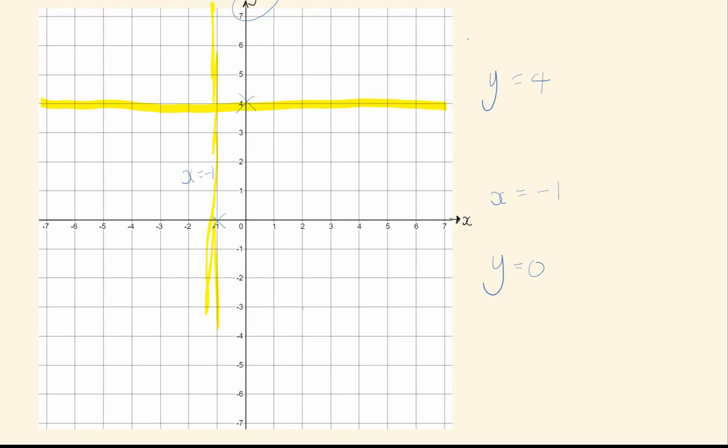So a couple of special cases, y equals 0 looks a bit more awkward, but it's basically just a horizontal line going through 0. So that is y equals 0.